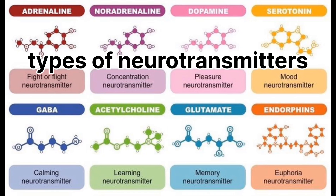Acetylcholine is involved in muscle movements, human memory, and is really important for human movement, learning, and specifically memory. If this neurotransmitter is released at the right level, your learning and memory will be very good.